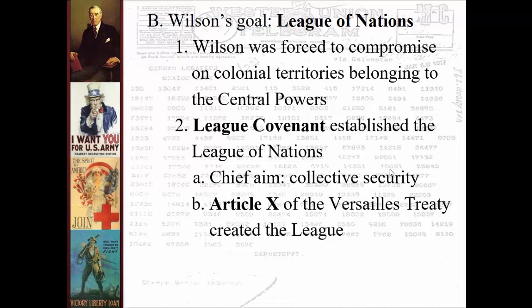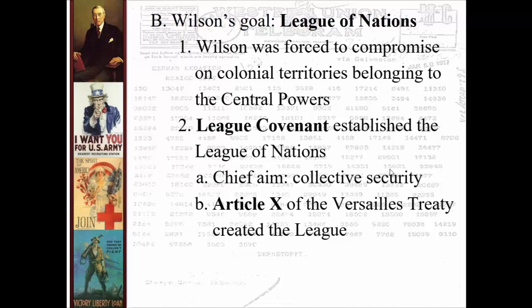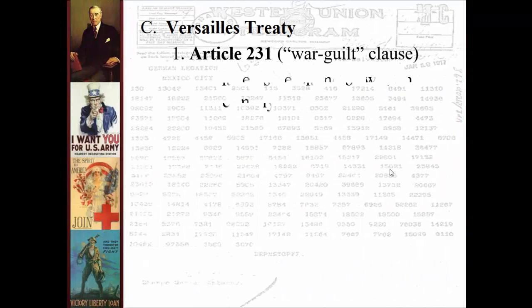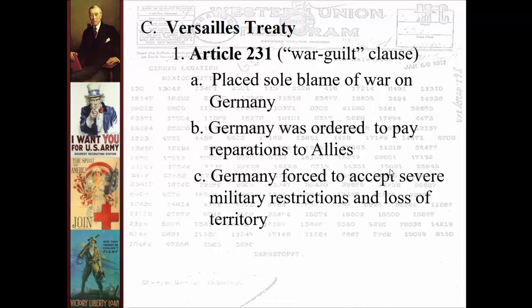Article 10 of the Versailles Treaty established the League Charter. As for the highlights of that treaty: Germany and Austria were crushed by it. The big one was Article 231, the war guilt clause, which blamed Germany for the war — even though we know Serbia, Austria, and other countries were involved and there were many factors. But ultimately Germany was given sole blame in the treaty and ordered to pay absurdly high war reparations to the victorious Allies.